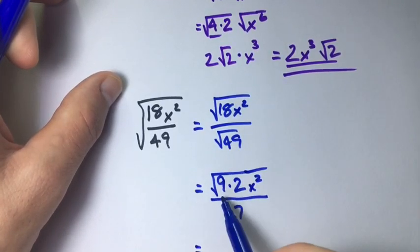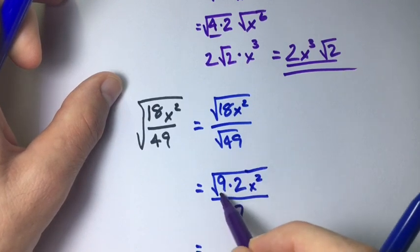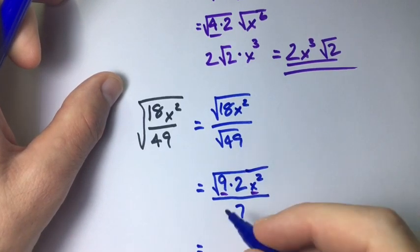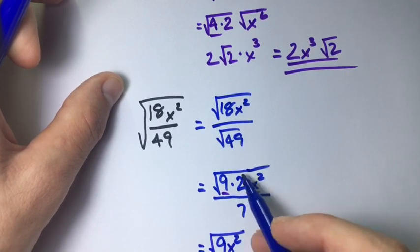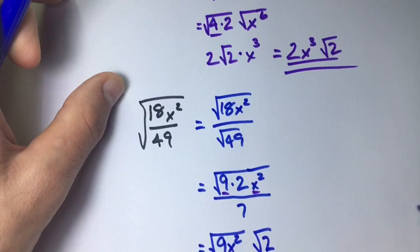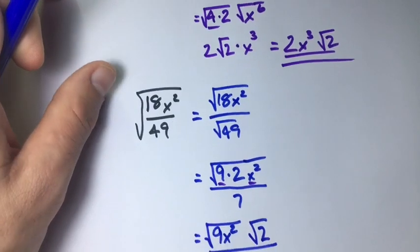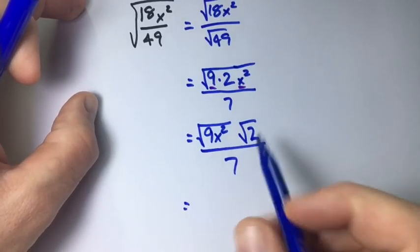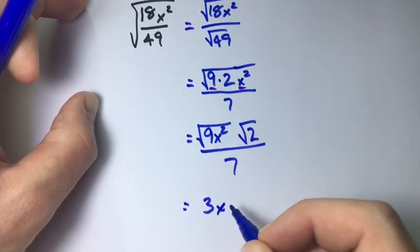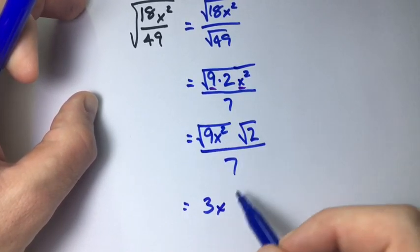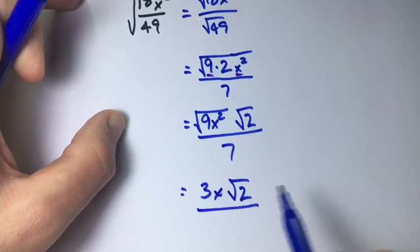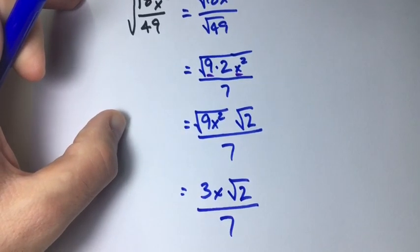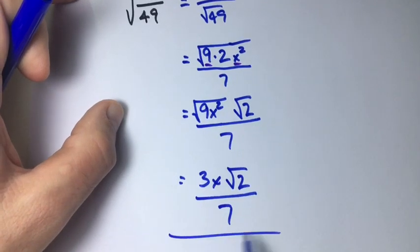So let's take our two perfect squares 9 and x squared and put those together. 9x squared square root of 2 all over 7. Alright we know the square root of 9 is 3. The square root of x squared is x. We can't do anything with that so we leave it as it is and then we leave it all over 7. That is your final answer.